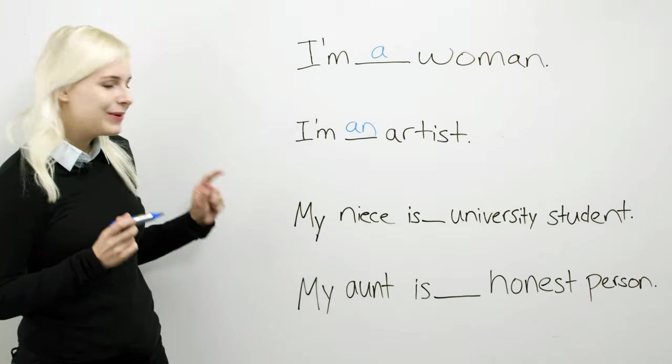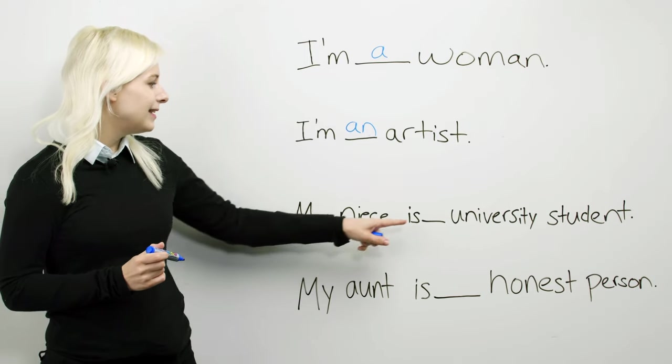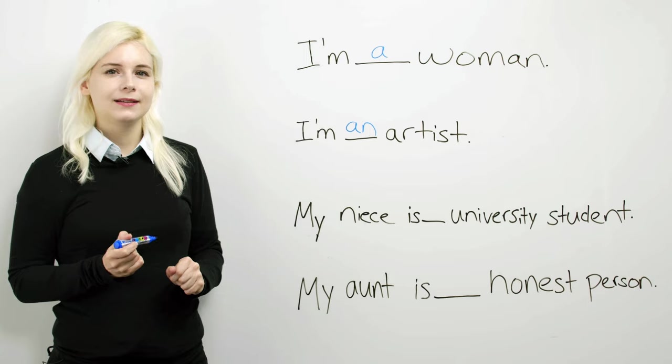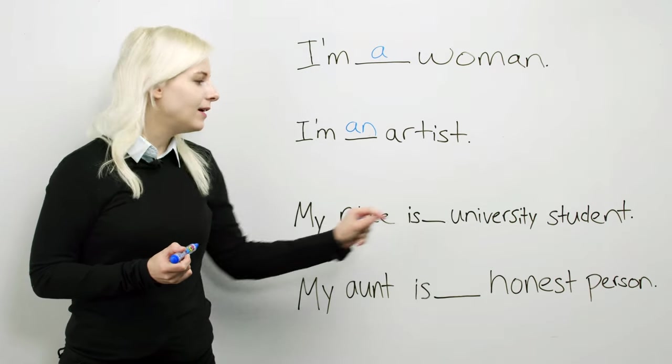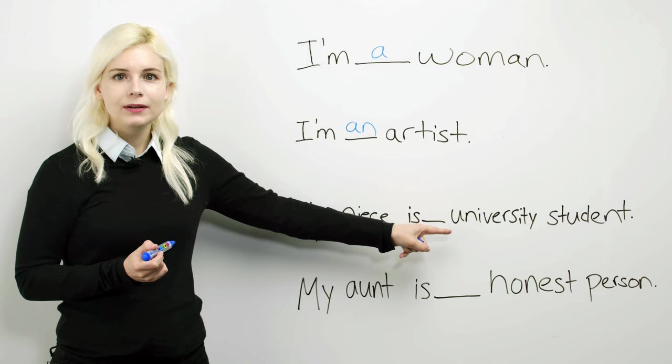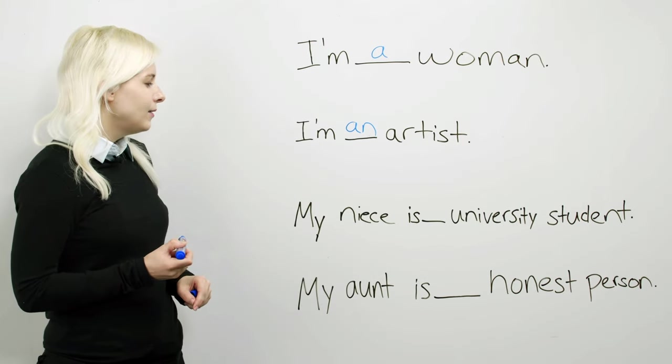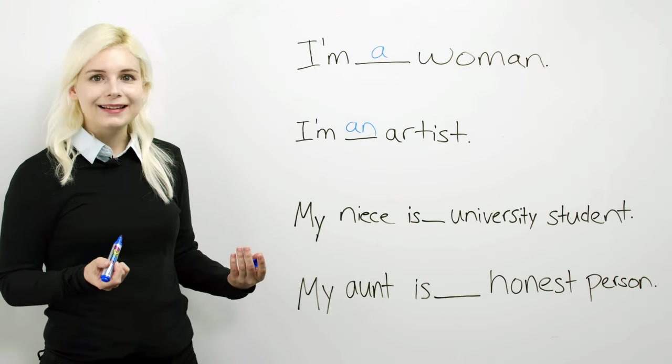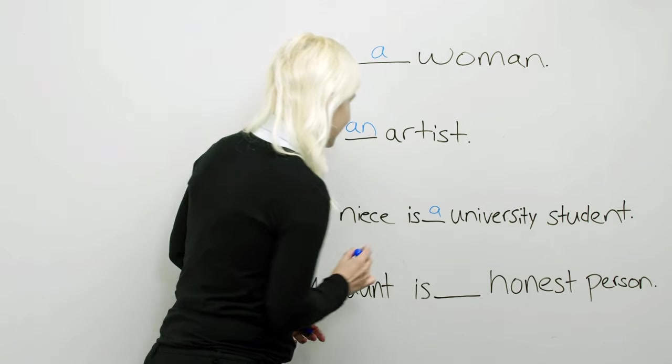Now if we keep going, we've got a little bit longer sentence. My niece is blank university student. So university starts with the vowel U, right? That's the letter U, it's a vowel. So what's the answer? My niece is blank university student.